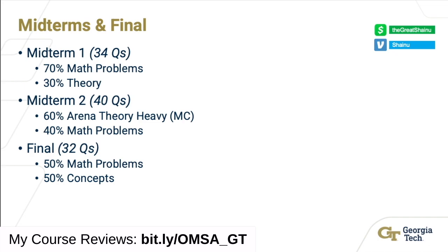Now let's talk about the midterms and final. For midterm one, there were 34 questions — about 70% math problems and 30% theory. For midterm two, there were 40 questions — 60% Arena theory including multiple choice and true/false, and 40% math problems. The final was 50% math problems and 50% concepts, and it is cumulative. You need to fully understand the concepts from both midterms. This course builds upon itself, so it's critical to know your basics — identifying distributions, doing integrals or summations for PMFs and PDFs.